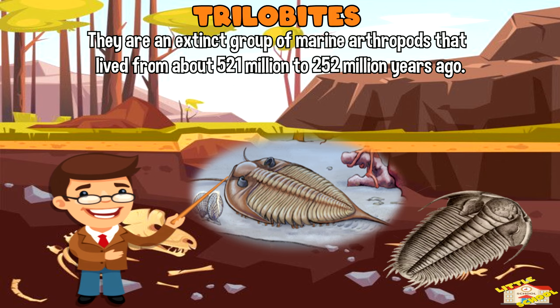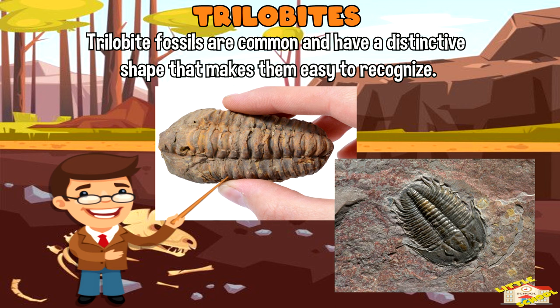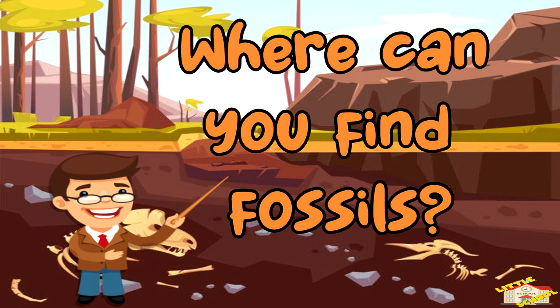Trilobites are an extinct group of marine arthropods that lived from about 521 million to 252 million years ago. Trilobite fossils are common and have a distinctive shape that makes them easy to recognize.